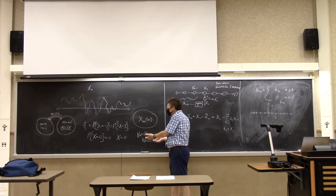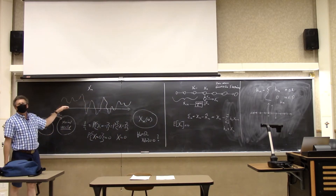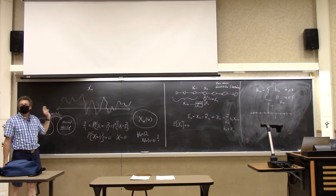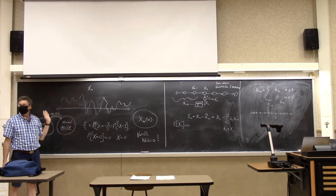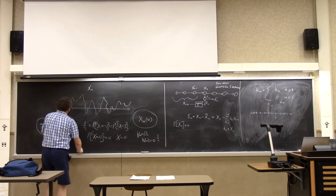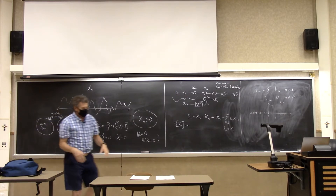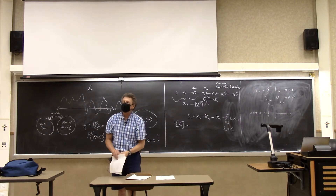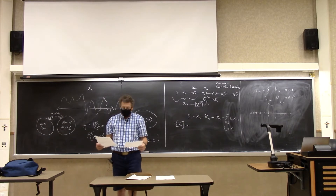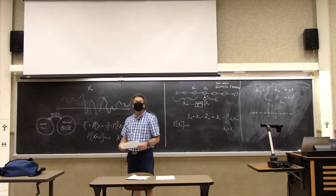Why did I digress into all this? Because you asked what sample paths look like. There could be all kinds of sample paths that look messed up and are completely inconsistent with your model of the random process — but they occur with probability 0. So this is sort of a typical sample path.